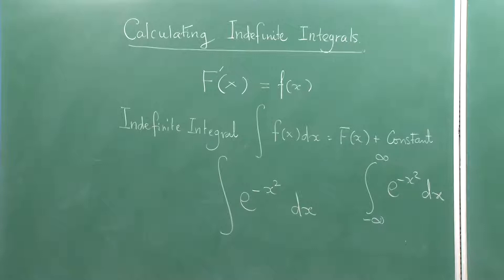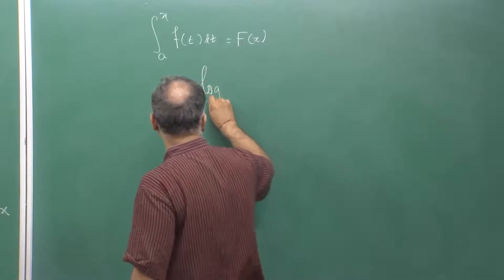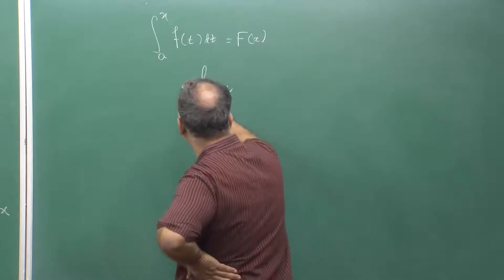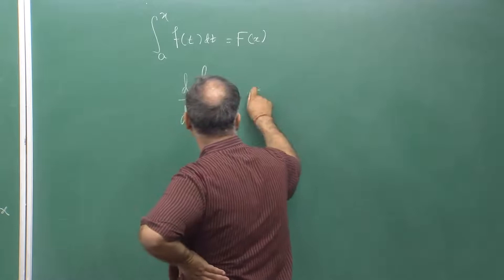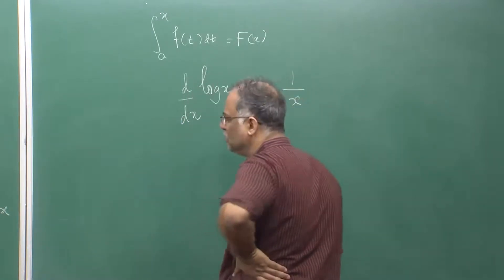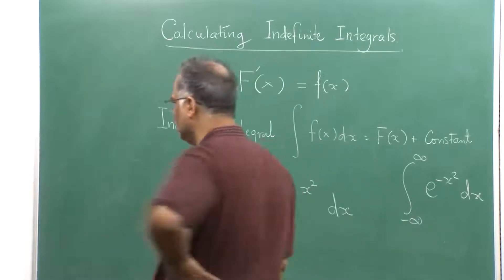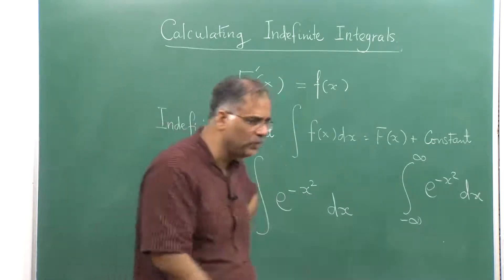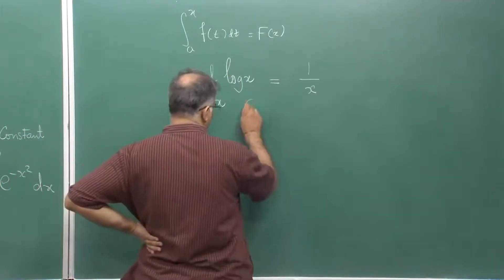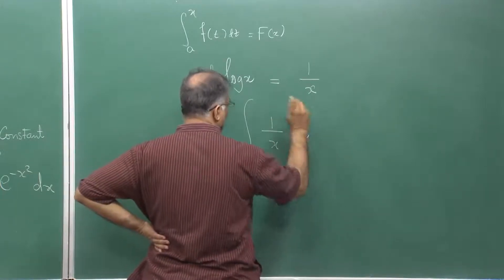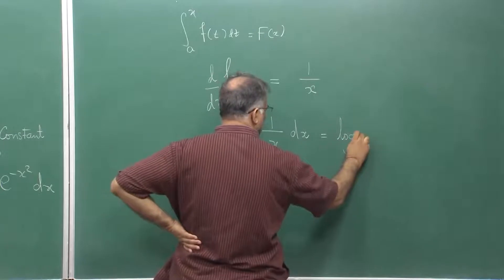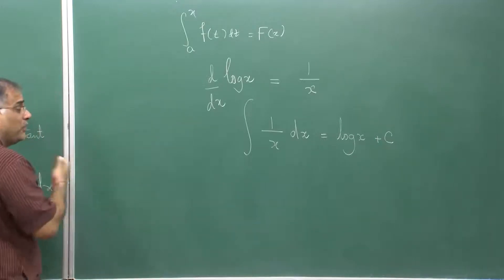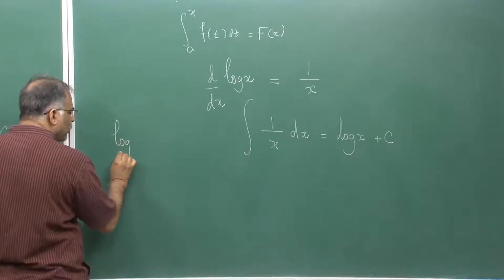Let us start with very simple things. For example, log x: if you differentiate log x, you get 1/x. Of course, x cannot be negative — even though 1/x makes sense for negative x, log of x would never make sense. So we write the integral of 1/x dx is log x plus c. This leads to what is called the logarithmic function.